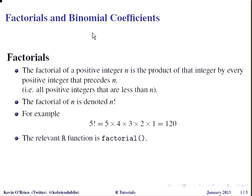A factorial of a positive integer, for example 1, 2, 3 and so on, is the product of that integer by every positive integer that precedes it. So that means every positive integer that is less than n. The way we would denote that is a factorial of n is denoted by this exclamation mark, so n exclamation mark.